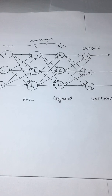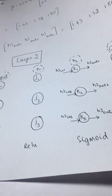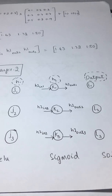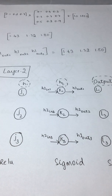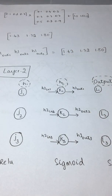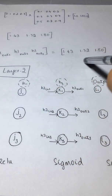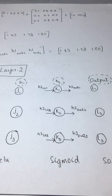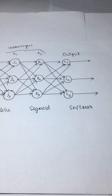Layer two is the forward pass from hidden layer one to hidden layer two. Now our focus is on passing from H1 to H2. Conceptually it is the same: you take the inputs, multiply with the weights, and add the bias. Then you pass it through your activation function. What changes here is the activation function — for this layer, the activation function is sigmoid, which is 1 divided by (1 + e^(−x)).